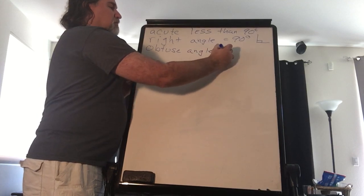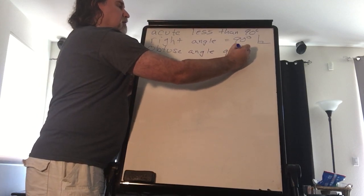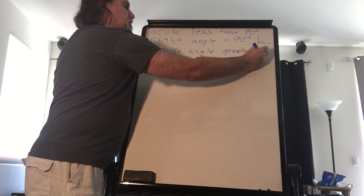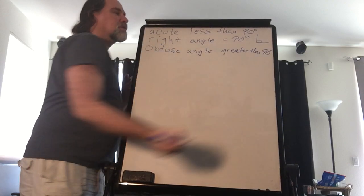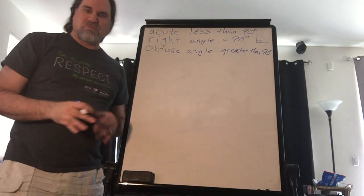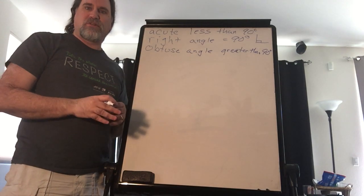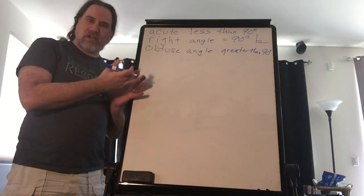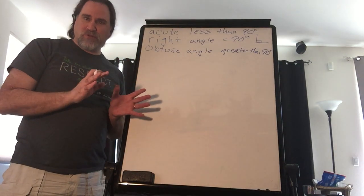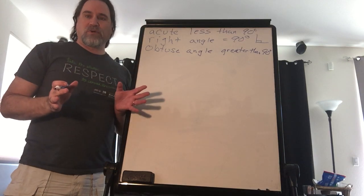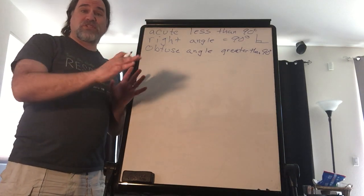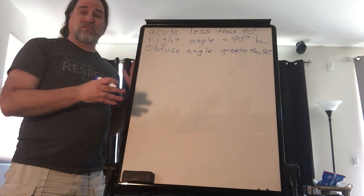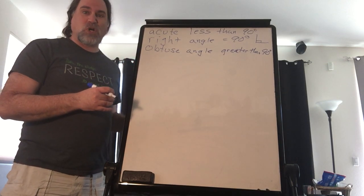And obtuse, that's greater than 90 degrees. Now I'm going to talk to you about some other angles later on, but these are the basics. This is all we need to really focus on for today, and we're really going to tie this all together with triangles.